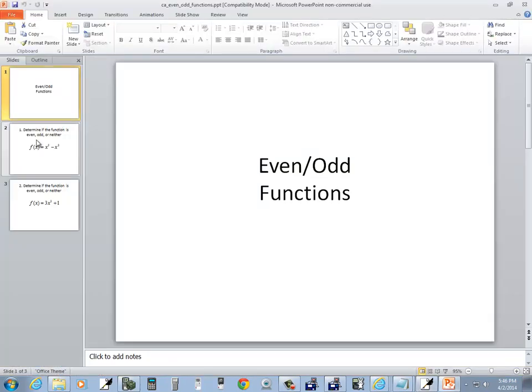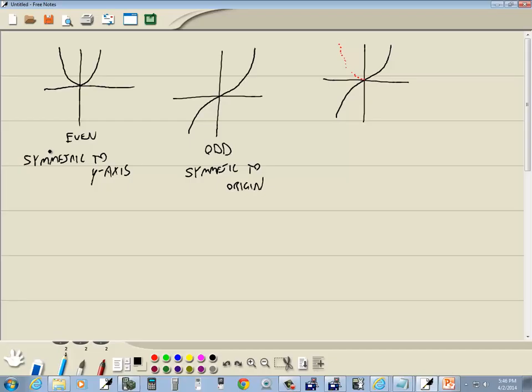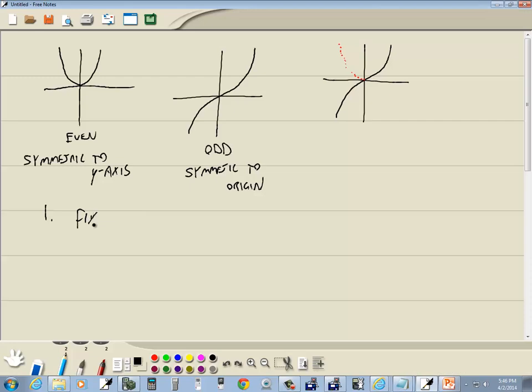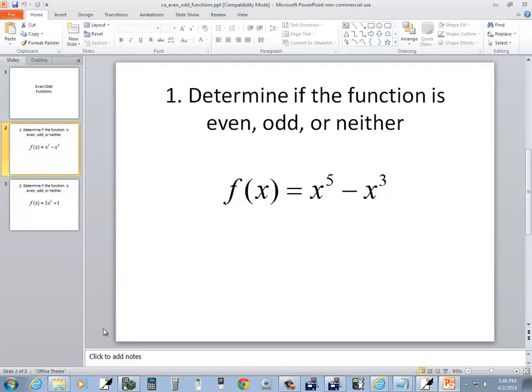Okay, let's look at our first problem. We've got f(x) equals x to the fifth minus x to the third. And we want to determine if the function is even, odd, or neither.